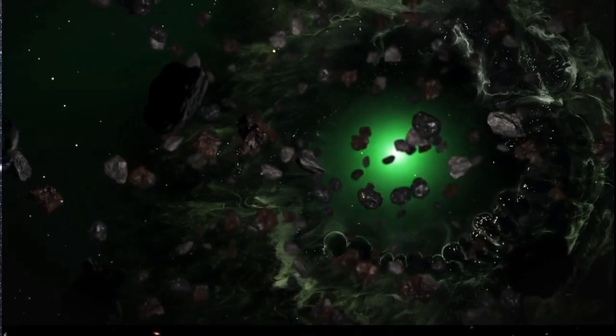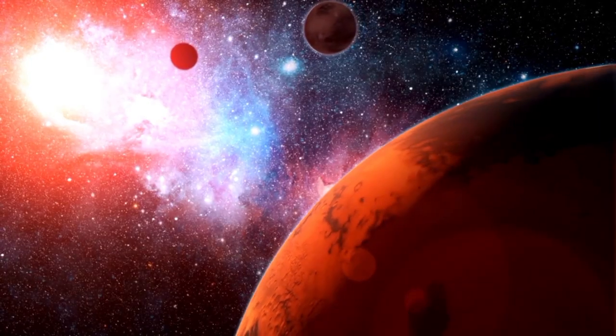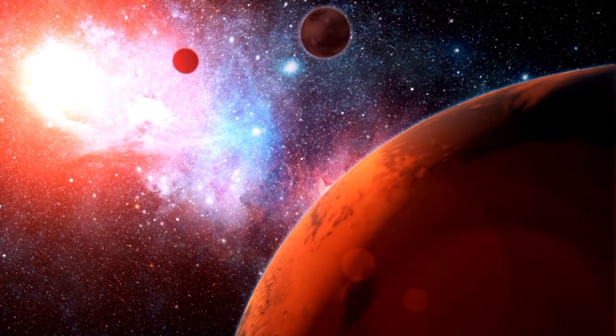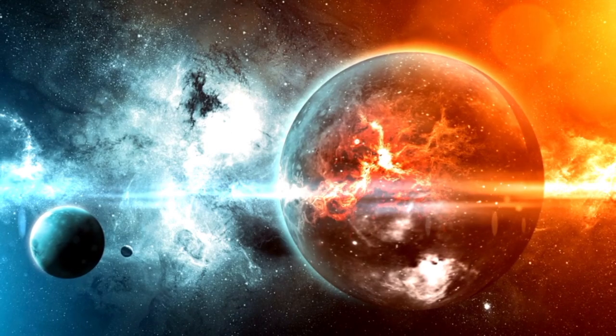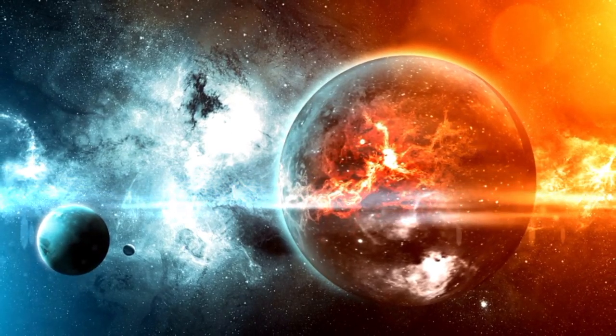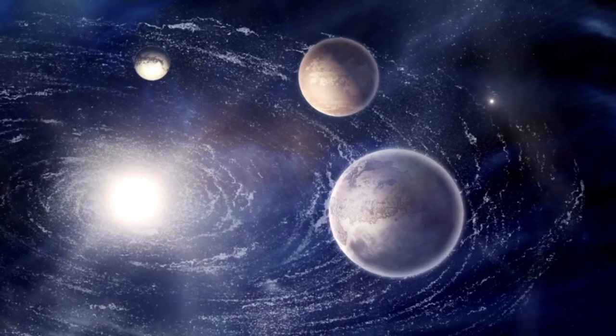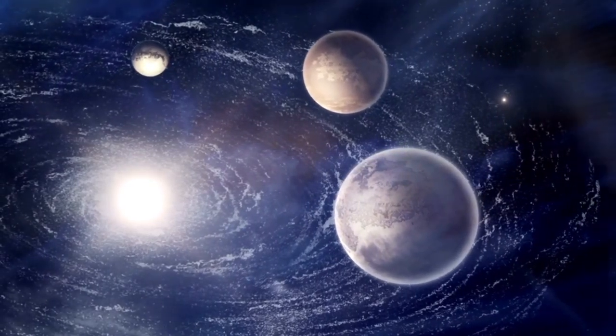Proxima b, the closest exoplanet to Earth, is within our neighboring stellar system, just 4.2 light-years away. Unlike Earth's orbit around the Sun, Proxima b is thought to be tidally locked, meaning one side experiences eternal daylight while the other remains in perpetual darkness.